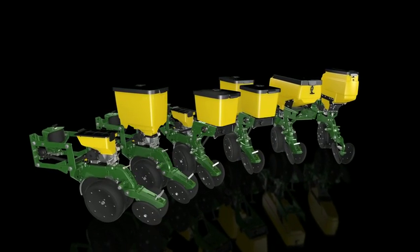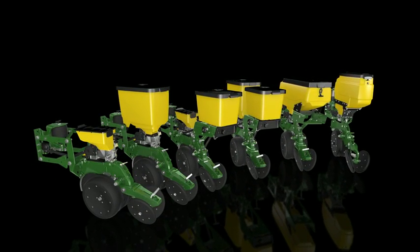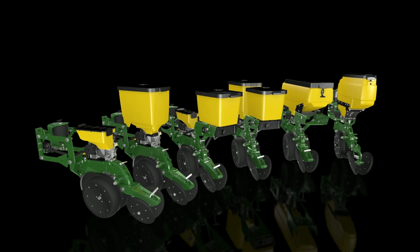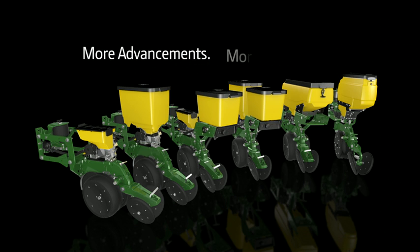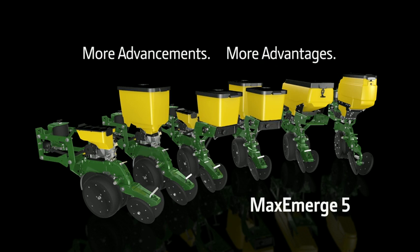Get a good look. A better way of planting has emerged. The new John Deere MaxEmerge 5 family of row units. More advancements. More advantages. MaxEmerge 5.